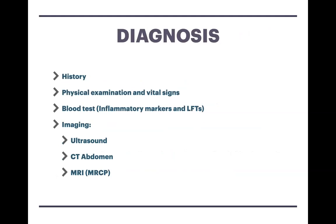So how can you diagnose a patient? Initially, we should take a thorough, detailed history — finding out exactly when the pain started, how often it occurs, and where the pain radiates to. We should do a formal physical examination, feel for Murphy's sign, and assess for tenderness in the right upper quadrant and epigastric region. We should also look at the patient's vital signs — temperature, blood pressure, saturations, heart rate, and respiratory rate — which is important when assessing for sepsis.